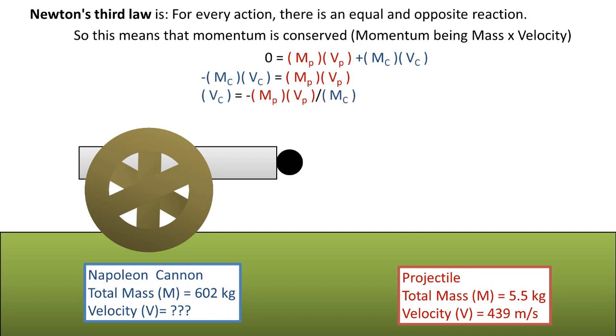We can now divide both sides of the formula by the mass of the cannon to get what we are solving for, velocity of the cannon, to one side. We are left with the formula being velocity of the cannon equals the mass of the projectile times the velocity of the projectile divided by the mass of the cannon.